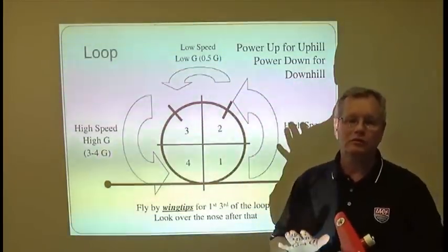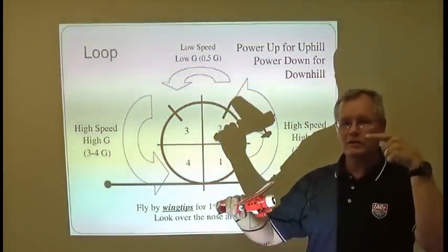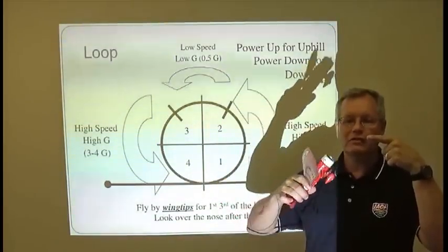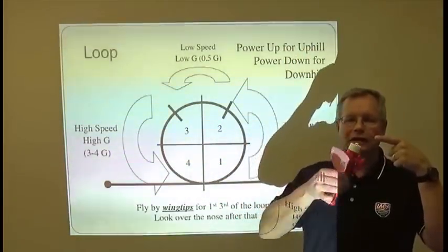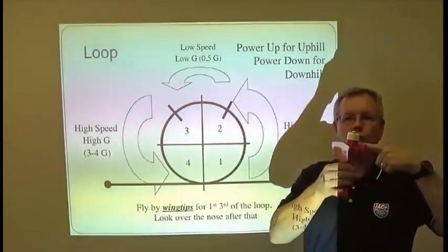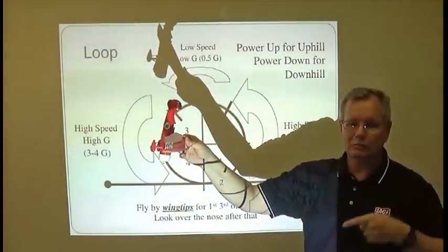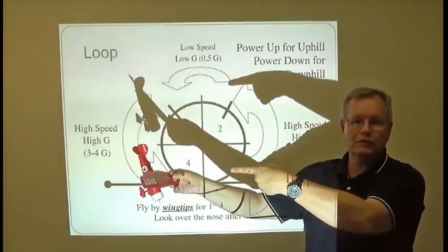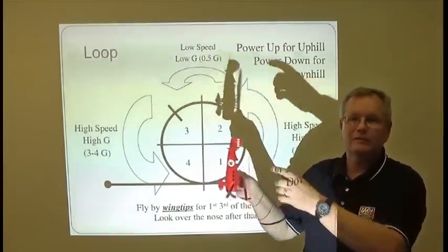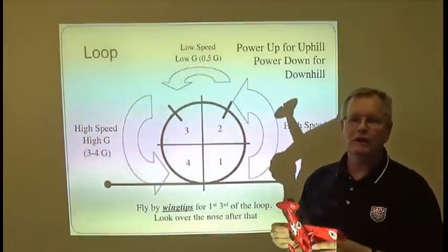Now a loop has to be wind corrected. If you have a lot of headwind, you're going to have to ease off the G a little bit here and let the loop bulge out a little bit, and then the wind will bring it back. Conversely, when you're on the back side of the loop, the wind's going to be trying to round out the loop too much and you'll have to pull it in. You have to wind correct.